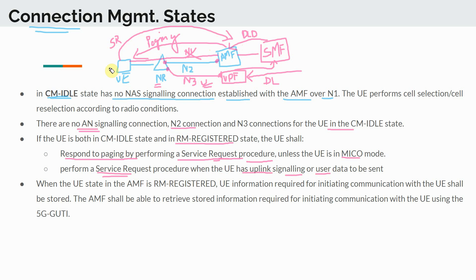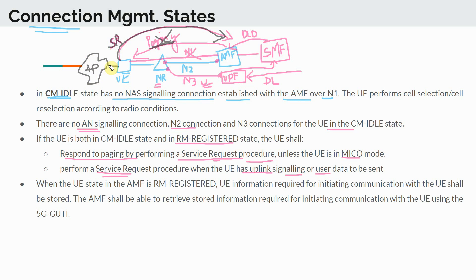For mobile-originated traffic — say a UE has an application like WhatsApp running and wants to send data even while in idle mode — the process is similar, except there is no paging involved. Since it is mobile-originated traffic, the UE sends a service request to the network, indicating it has data or signaling to send and requesting resources.